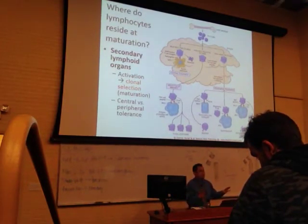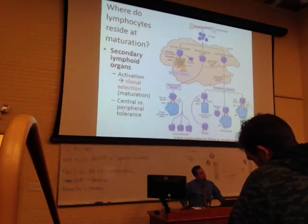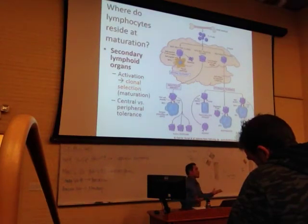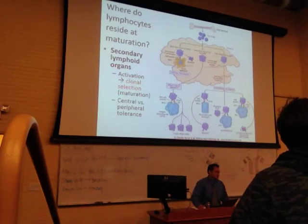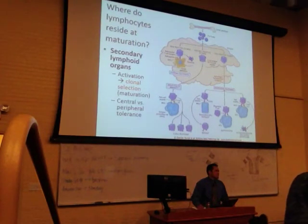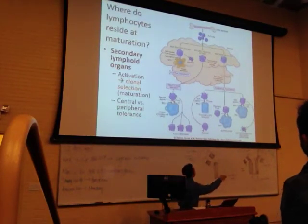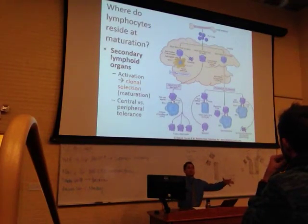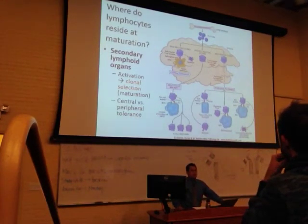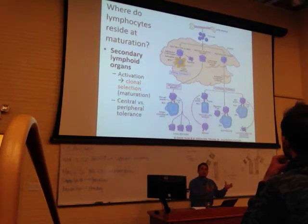If peripheral tolerance fails to catch something, it slips into an autoimmune disorder. Central tolerance happens in the thymus only; peripheral tolerance means it made it out into circulation and you're catching it there — using apoptosis under specific characteristics in both processes. The regulatory T cells circulate in the bloodstream as a backup.